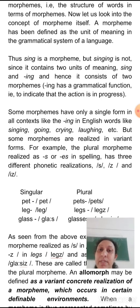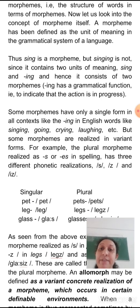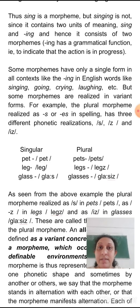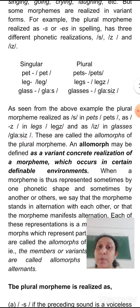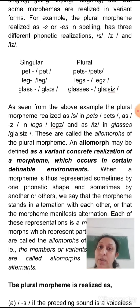But some morphemes are realized in variant forms. For example, the plural morpheme — spelled 's' or 'es' — has three different phonetic realizations: /s/, /z/, and /ɪz/. See the examples: 'pet' → 'pets', 'leg' → 'legs', 'glass' → 'glasses'. The plural morpheme is realized as /s/ in 'pets', /z/ in 'legs', and /ɪz/ in 'glasses'.